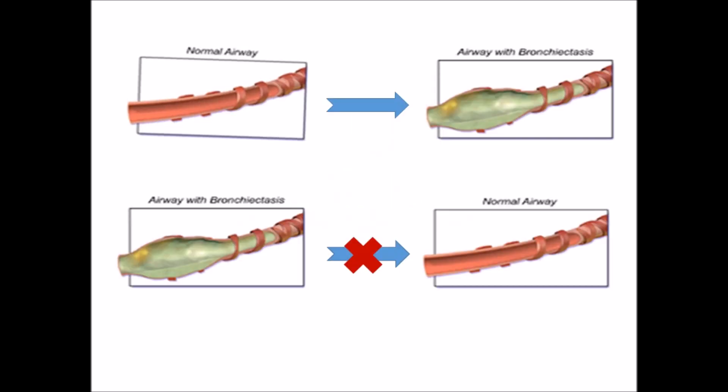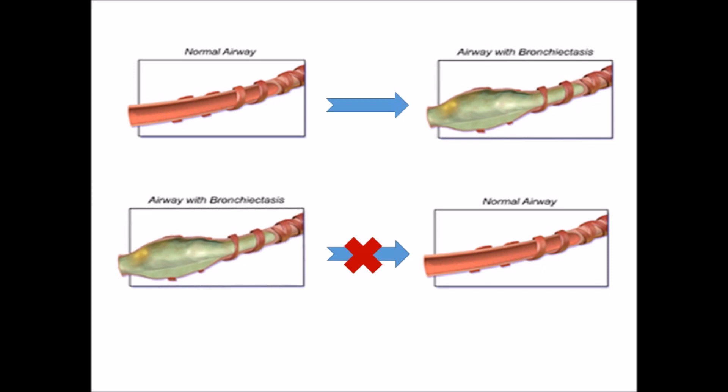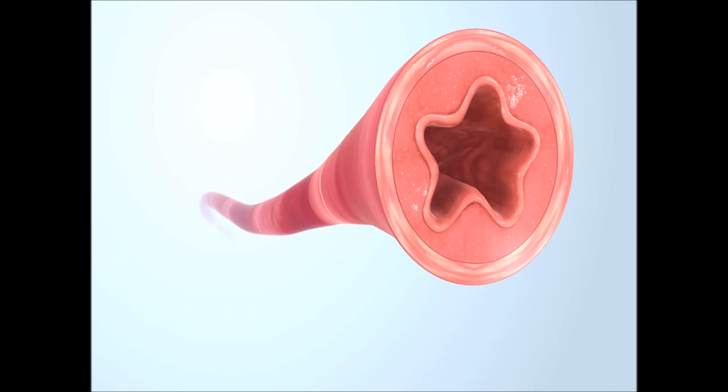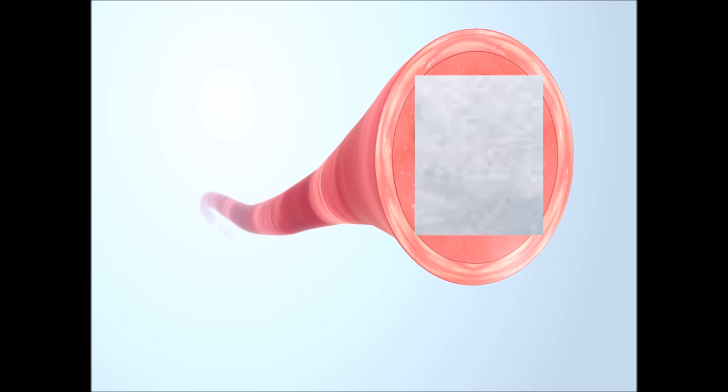I is for irreversible. Once the normal airway dilates and becomes bronchiectatic, it cannot become normal again. E is for embolization — a procedure where an artery that is bleeding is plugged using special agents.